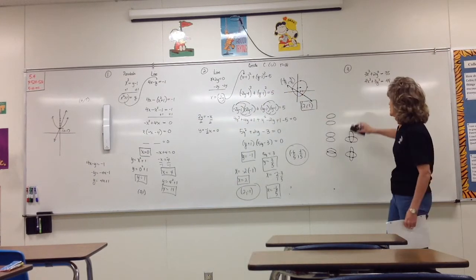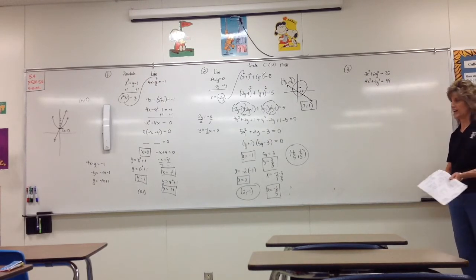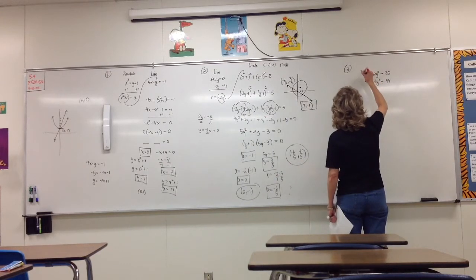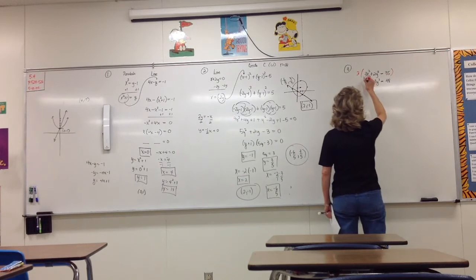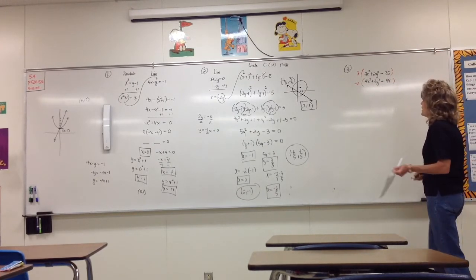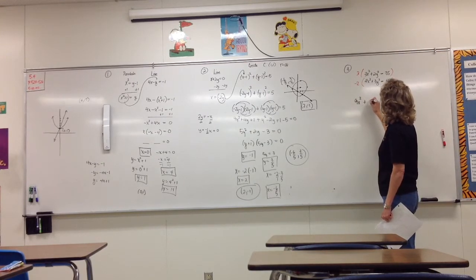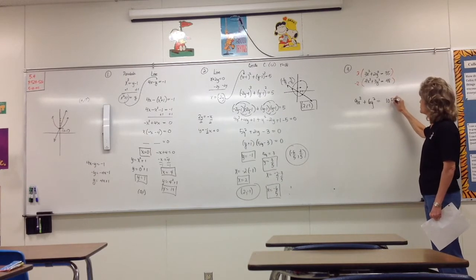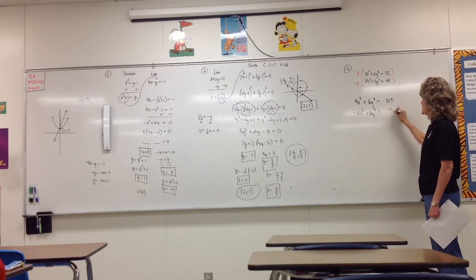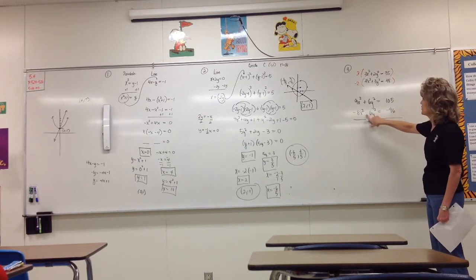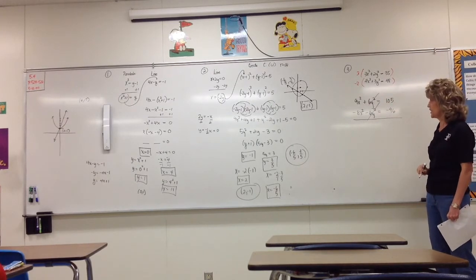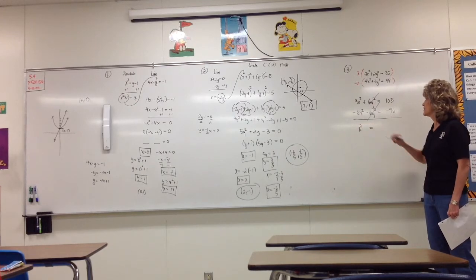So we start solving and figure out which case it is. To eliminate y squared, we'll turn both into sixes — multiply the top equation by three and the bottom equation by negative two all the way across. The top becomes 9x squared plus 6y squared equals 105. The bottom becomes negative 8x squared minus 6y squared equals negative 96. When we add, 6y squared and negative 6y squared eliminate, leaving x squared equals 9.